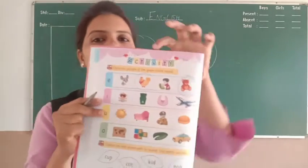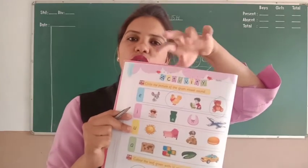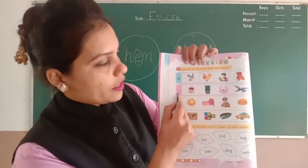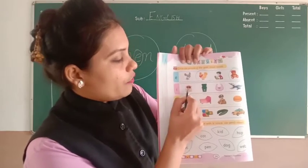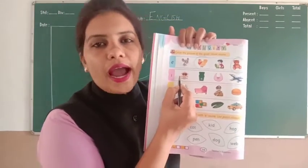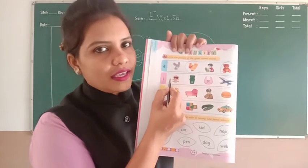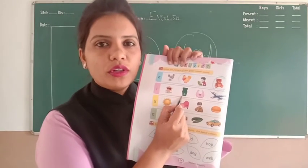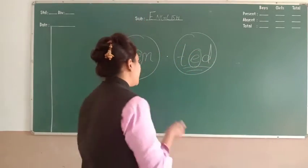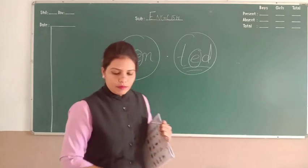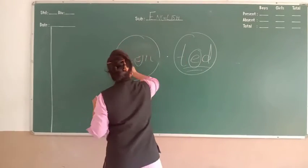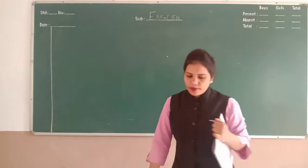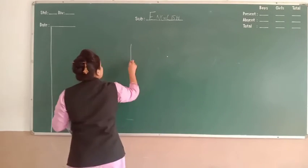तो यह activity है - ऐसे आपको दो pictures हैं जो E sound वाले हैं उस पे मैंने circle किया। Next one है I sound। तो यह first picture है - baby is in crib, तो crib में I नहीं आता, इसमें A आता है। यहाँ पे second one है dustbin - bin B-I-N, तो bin पे circle करेंगे।